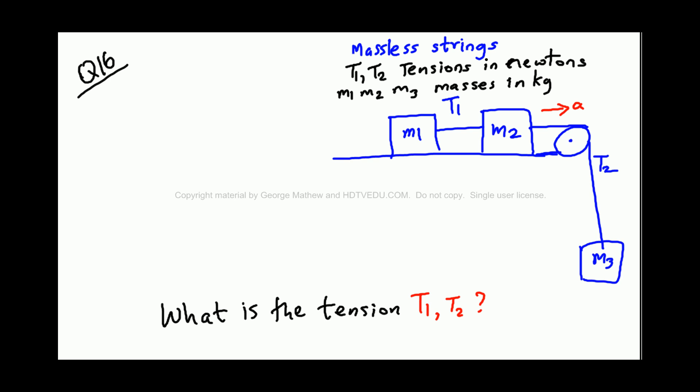Here we have a system of three masses attached by strings. M1, M2, M3 are masses in kg.